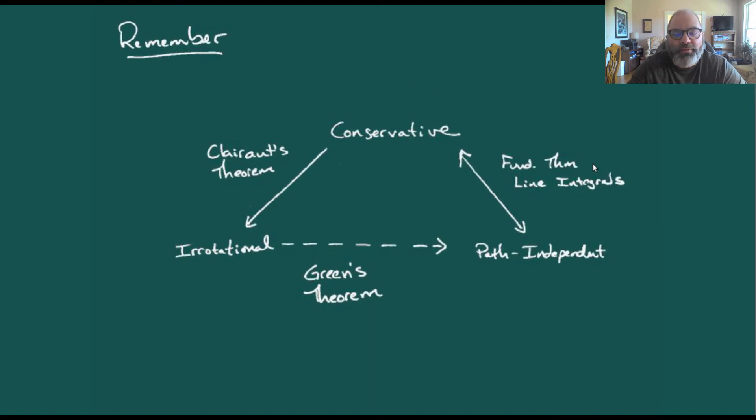Coming back to this map that we've seen before, we've got this connection between a conservative vector field looking like the gradient of some potential function. Then we've got path independence, meaning our line integrals don't depend on the path we take between two points, only on the endpoints.